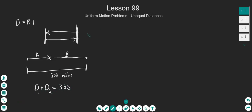So that's where we had distance one plus distance two equals some number — in this case, 300 miles. The first problem type was distance one is equal to distance two. Those are the two kinds of problems we've dealt with up to this point. Today we're going to talk about a third kind of problem: unequal distances.